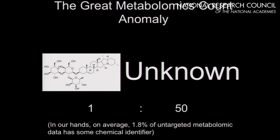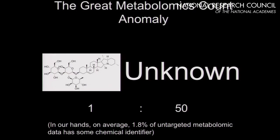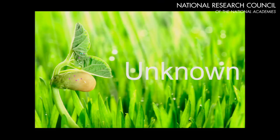Conversely, going to the molecules, there is a similar type of anomaly. For every molecule that we can get some sort of chemical identifier for — let's say identification — there are at least 50 unknown molecules that you can capture by mass spectrometry. In my hands, only about 2% are ones we can provide annotations for.